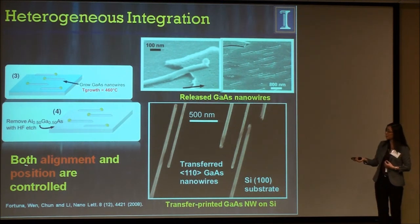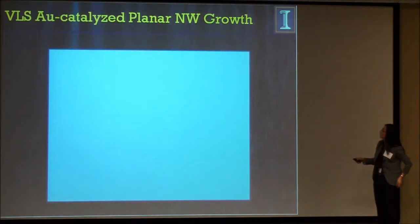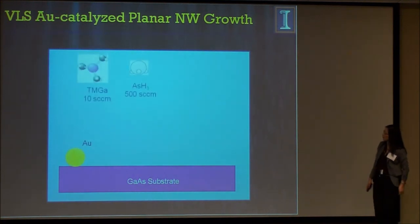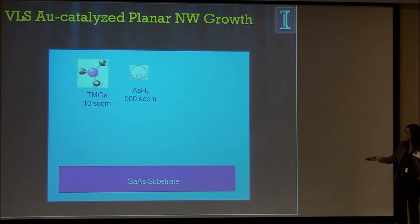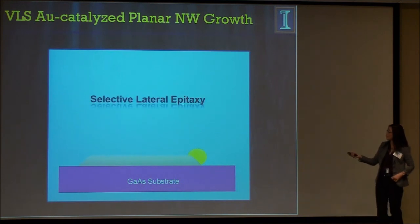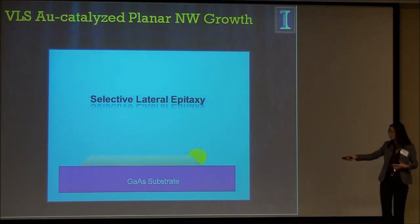The advantage of this technique is that you not only keep the alignment but also maintain position control. Whatever registry you had before, you can faithfully pick it up and put it on another substrate. Here's a schematic showing how these wires grow: gold particles are placed on the substrate, then precursors for gallium and arsenic are switched, and the wire grows laterally while the gold is pushed to the growth front. We call this selective lateral epitaxy. Selectivity comes from the gold — without gold, there is no deposition.